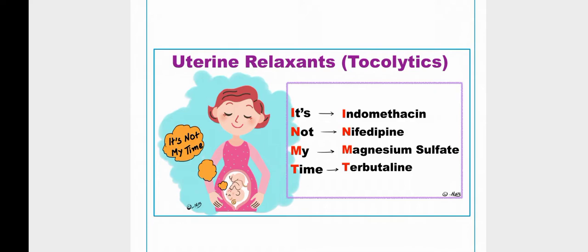The important drugs which relax uterine musculature can be remembered with the mnemonic: 'It is not my time for the baby.' I stands for indomethacin, N for nifedipine, M for magnesium sulfate, and T for terbutaline. Indomethacin is a non-steroidal anti-inflammatory drug (NSAID).